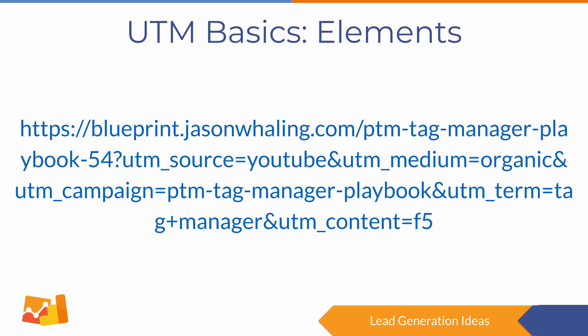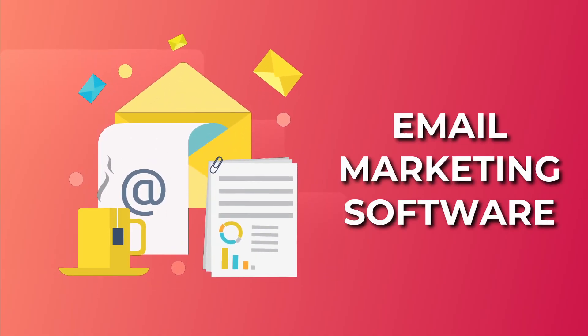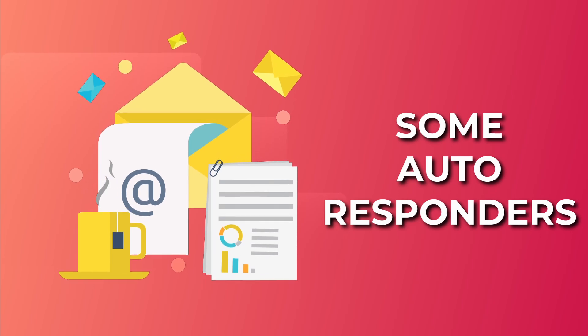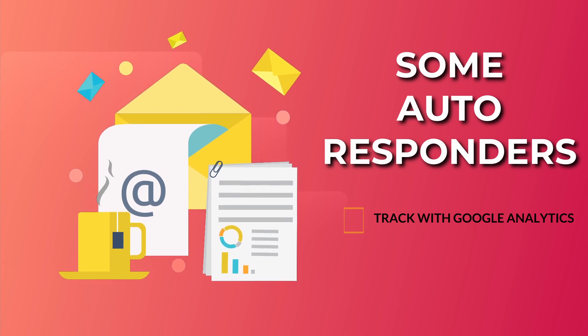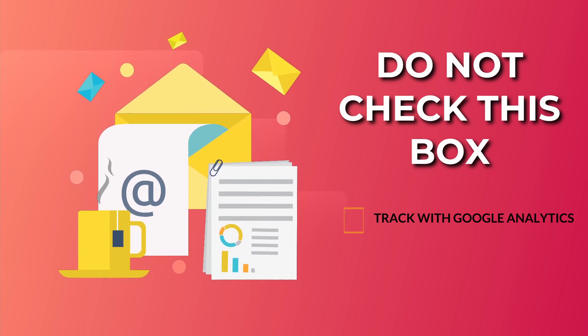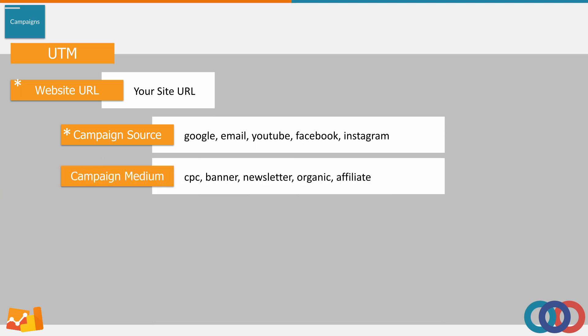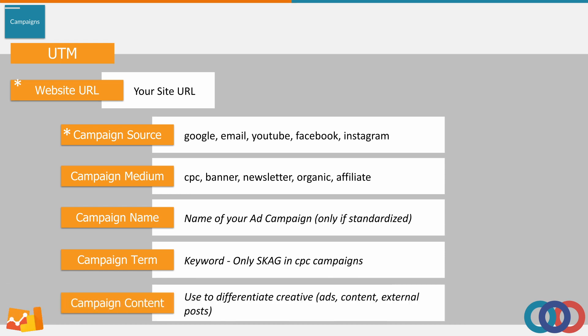Click the link in the description below if you want access to this free UTM builder. Double check your URL to make sure you haven't overlooked anything before posting. Now, there is one thing I need to mention about email marketing software — some autoresponders allow you to check a box that says 'track with Google Analytics' automatically. You definitely do not want to check this box, because you need to make sure the naming conventions stay the same as your business grows, especially if you switch providers in the future.